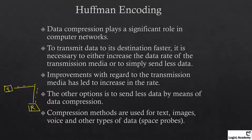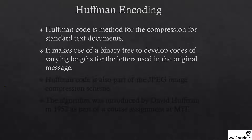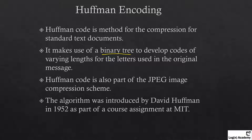Compression methods are used for text, images, voice, and other types of data. Huffman code is a method for compression of standard text documents. It makes use of a binary tree to develop codes of varying length for the letters used in the original message. Huffman code is also part of the JPEG image compression scheme. The algorithm was introduced by David Huffman in 1952 as part of a course assignment at MIT.